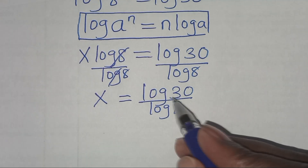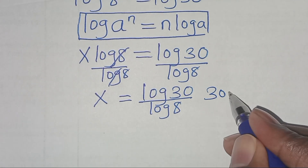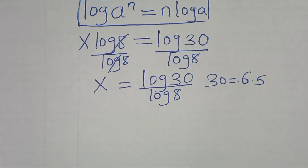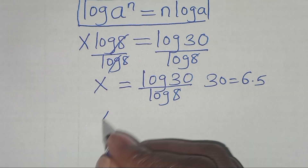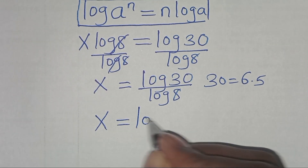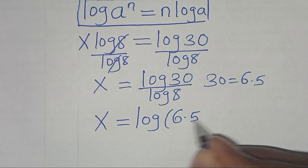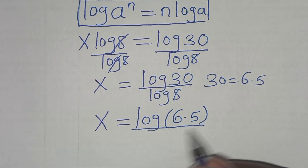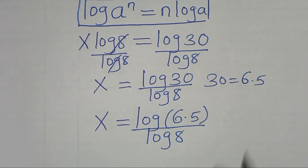Now, we can express 30 as 6 times 5. Substituting this, we have that x is equal to log(6 times 5) divided by log 8.